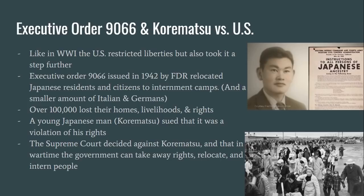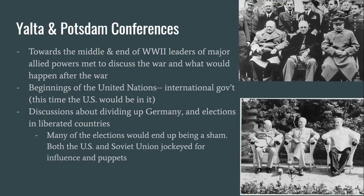Towards the middle and end of World War II, leaders of the United States, Great Britain, and Soviet Union, along with other allies, met at conferences to discuss both the war and what would happen after the war. Here we see the beginnings of the United Nations, which would be a second try at international government, this time with the United States taking the leading role. There were also discussions and plans made about dividing up Germany and holding free and fair elections in liberated countries. However, those elections would end up being far from free and fair, as the U.S. and Soviet Union jockeyed for influence and puppet governments that would support either side.